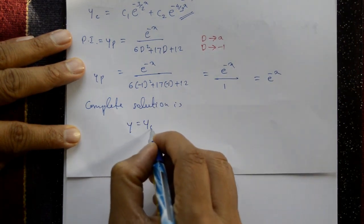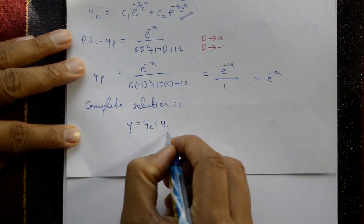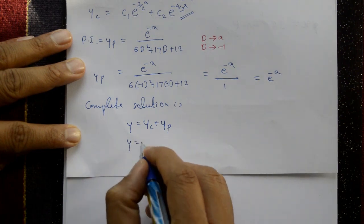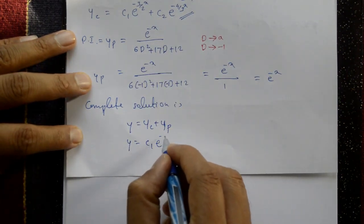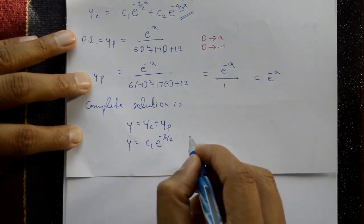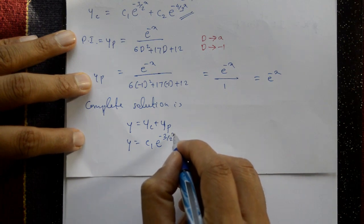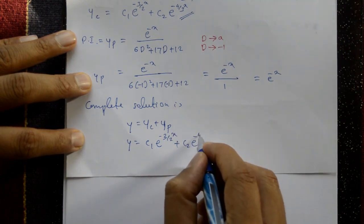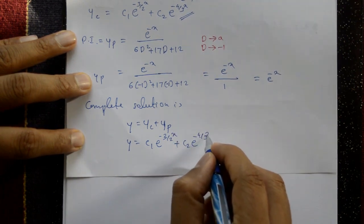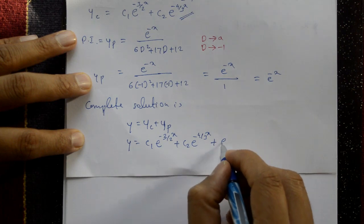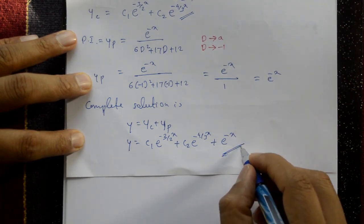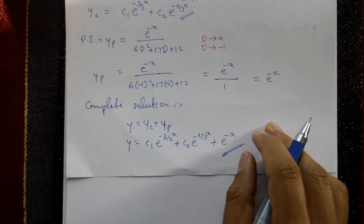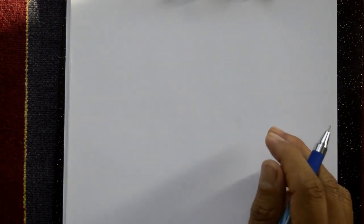The complete solution is y = yc + yp, so y = c₁e^(-3x/2) + c₂e^(-4x/3) + e^(-x). This is the required complete solution.